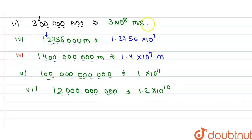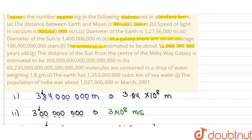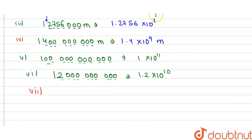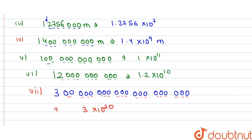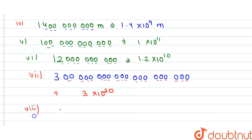Now the next statement: the distance of the Sun from the center of the Milky Way galaxy is 300,000,000,000,000,000,000 meters. Just count the number of digits: 1, 2, 3, 4, 5, 6, 7, 8, 9, 10, 11, 12, 13, 14, 15, 16, 17, 18, 19, 20. So we can write 3 × 10²⁰.